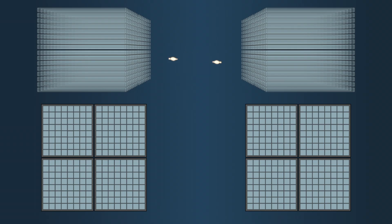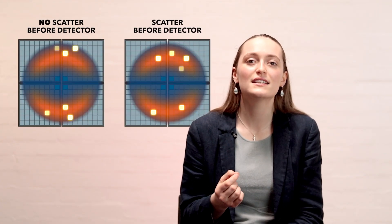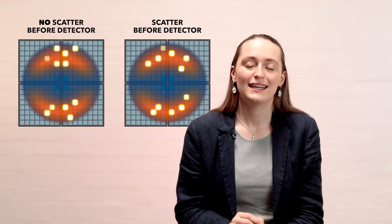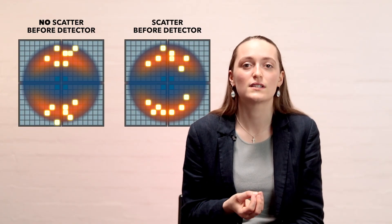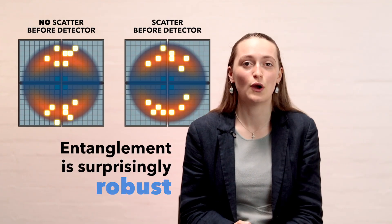We looked at cases where one of the back-to-back photons scattered before it reached the detector. The results of the experiment showed the almost identical patterns on the screen, even when the prior scattering was large, which means the entanglement is surprisingly robust.